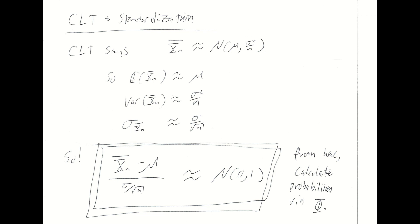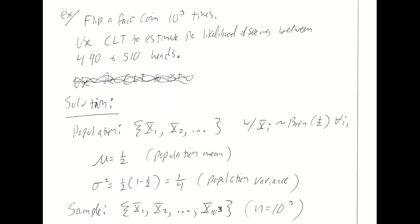Let's consider an example. We'll flip a fair coin 1000 times and use the central limit theorem to estimate the likelihood of seeing between 490 and 510 heads. That should be fairly likely — it wouldn't really surprise me to see fewer or more, but there should be a substantial likelihood of seeing between 490 and 510 heads in 1000 fair coin flips. Let's use the central limit theorem to estimate this likelihood.